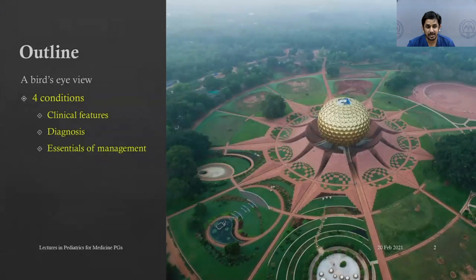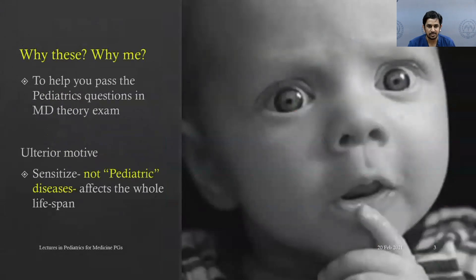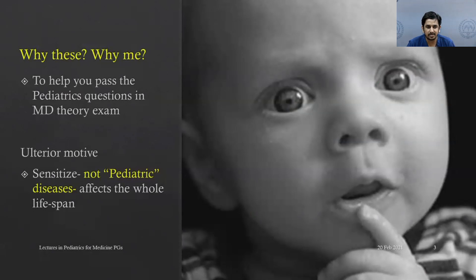The outline of today's lecture: it would be unfair to cover all four conditions together in one class, so I'll present only a bird's eye view — the basics of clinical features, how we establish diagnosis, and essentials of management. Many of you may wonder why these topics. One objective is to help you pass the paediatric questions in the MD theory exam, but my ulterior motive is to sensitize general medicine PGs that these are not just pediatric diseases — they affect the whole lifespan. That is the real purpose of today's class.